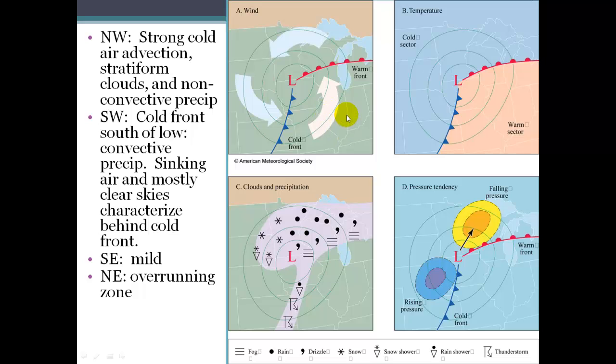And then in the southeast portion of the storm, which is down here, we have the warm air mass. So nice, mild conditions. You can see there's no real precipitation in this area. It's all the warm air.